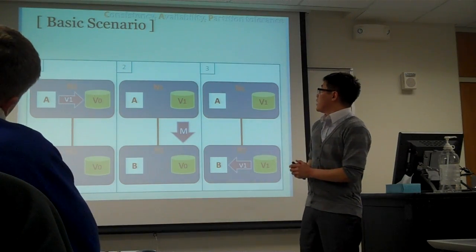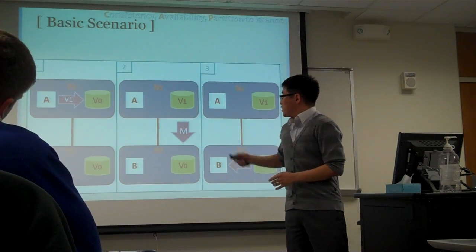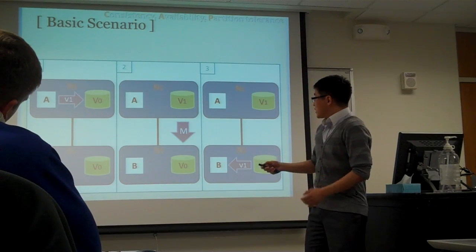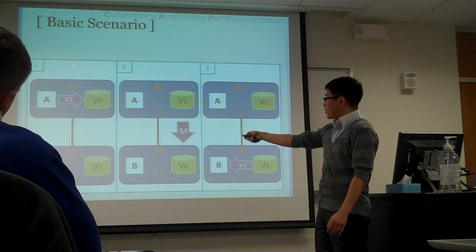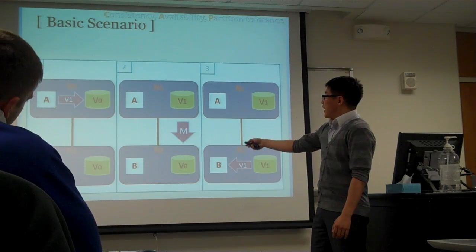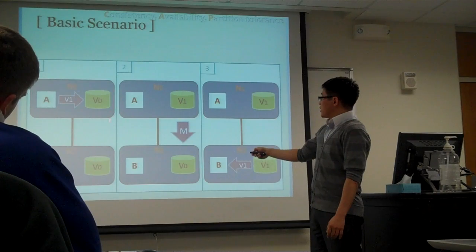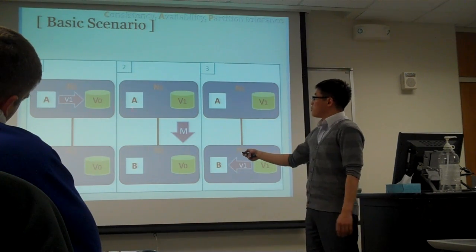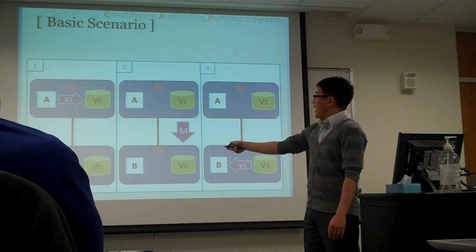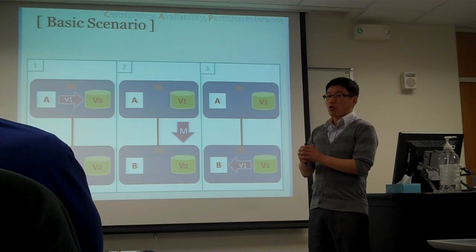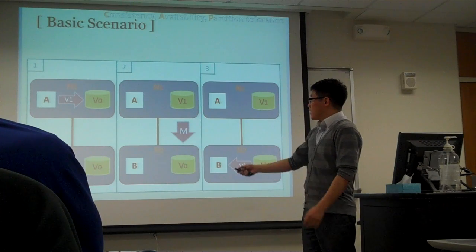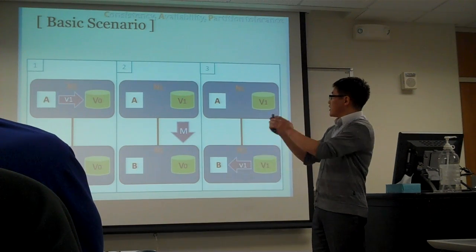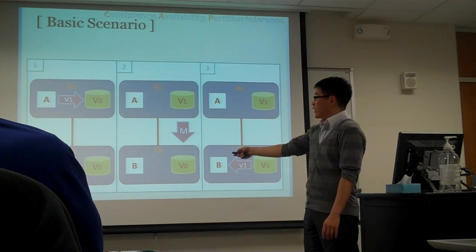This is the basic scenario. I'll use these pictures many times to explain each quality. Basically, there are two nodes which are separated by the network, and both nodes share their data with an initial value of 0. A and B are called algorithms or processes, and they can request read or write operations on the data.